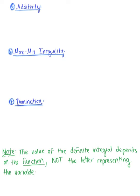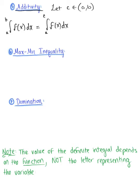The next property is additivity. If we let c be some element in the open interval from a to b — meaning there's some real number c that falls between the bounds — we can take a definite integral from a to b of f of x dx and split it into two pieces: the integral from a to c of f of x dx, plus the integral from c to b of f of x dx.